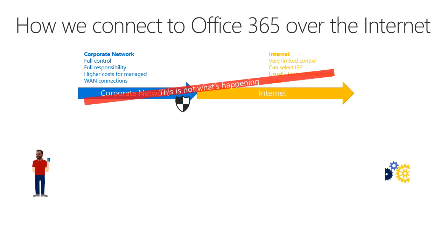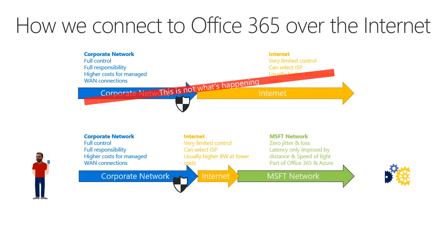But the reality is that this isn't quite true when talking about Office 365 and Azure, because Microsoft made massive investments in our own network — the Microsoft network shown here. With this network, we are in control of what's happening inside it. We are only using the internet to connect to our service for a very short amount, then you enter our own network. From there on, we ensure there is no jitter or packet loss being added, and latency is only imposed by the speed of light and distance.